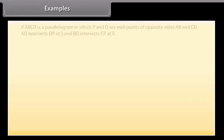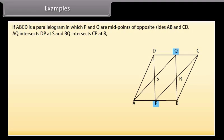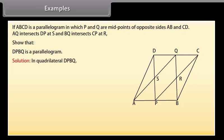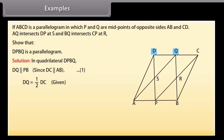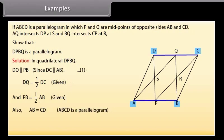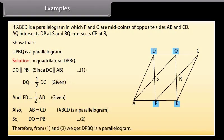Example: If ABCD is a parallelogram in which P and Q are midpoints of opposite sides AB and CD, AQ intersects DP at S and BQ intersects CP at R, show that DPBQ is a parallelogram. Solution: In quadrilateral DPBQ, DQ is parallel to PB since DC is parallel to AB. DQ = ½DC and PB = ½AB. Since AB = CD (ABCD is a parallelogram), DQ = PB. From (1) and (2), DPBQ is a parallelogram.